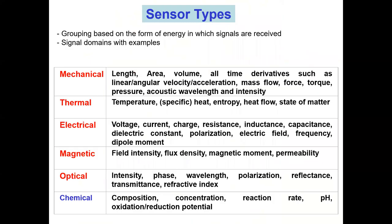Here is one way of categorizing sensor types. Sensors can be mechanical type — you can see what is measured for mechanical sensing. Similarly, there is thermal sensing, electrical sensing, magnetic sensors, optical sensors, and chemical sensors, where you're looking at composition and concentration of chemical species. We are primarily going to talk about chemical sensors in these lectures.